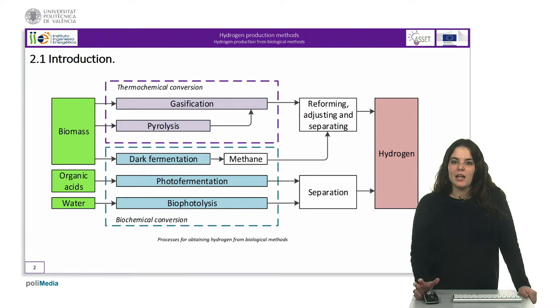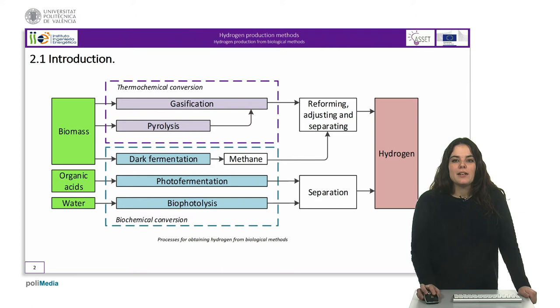The processes for obtaining hydrogen from biological methods can be classified in two types, thermochemical processes and biochemical processes, as we can see here in the figure.